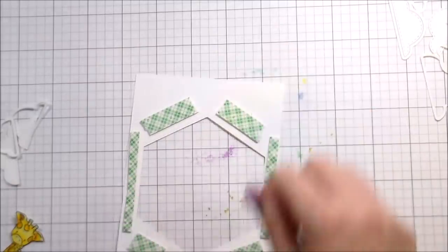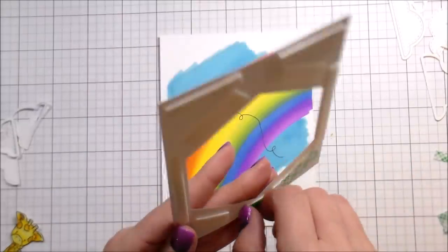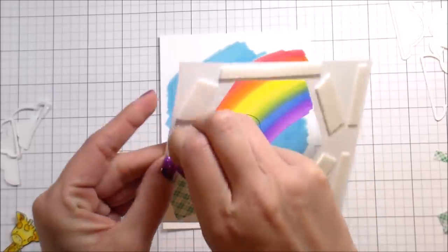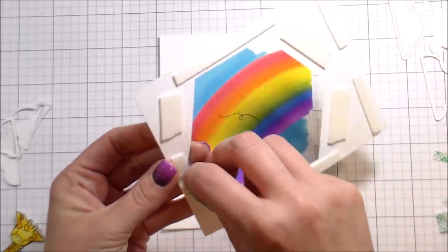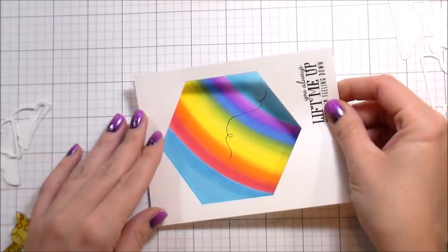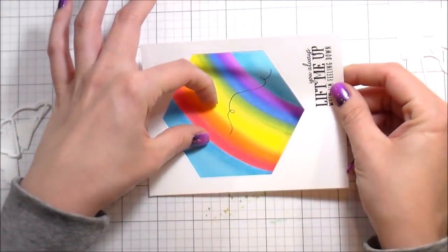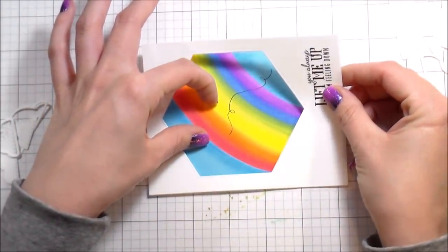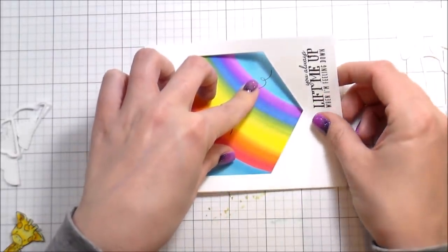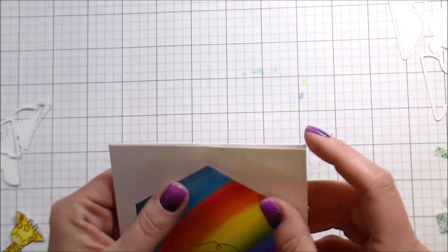Building the base of the card here, I'm adding foam tape around that frame so that I can put it on top of the rainbow and it will sit up a little bit, just add a little bit more interest.